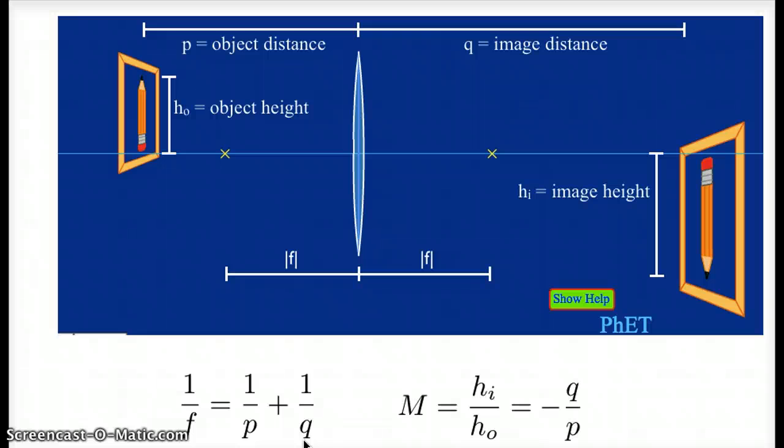Another useful equation is the equation for magnification. So the magnification is the ratio of the image height to the object height. And here, if we label the top of the screen as our positive direction, then the object height would be a positive number here, and the image height would be a negative number because this image is inverted, it's pointing downward.